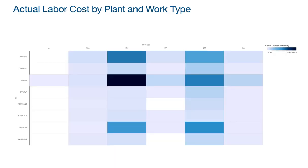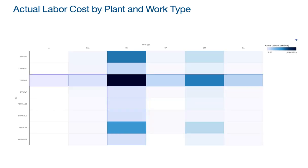Let me look at it a different way — let me look at my cost by work type with a heat map. My eye is drawn to this dark center area, and I can see that again labor costs are coming from Detroit with corrective maintenance work.